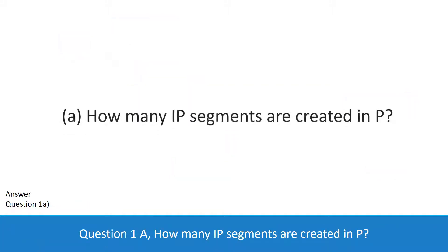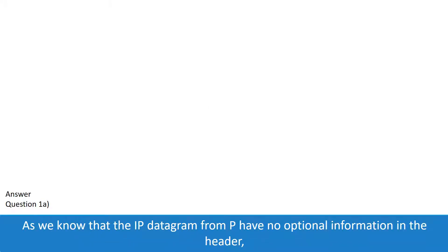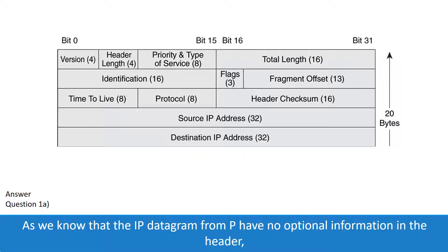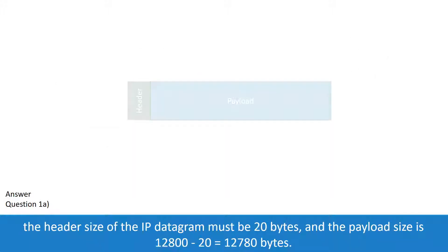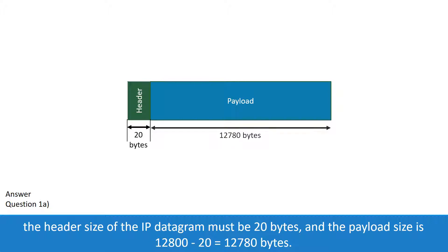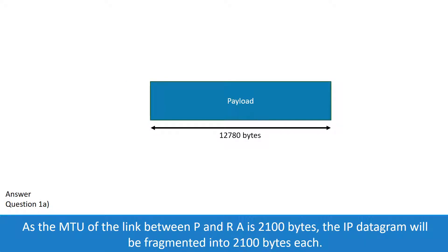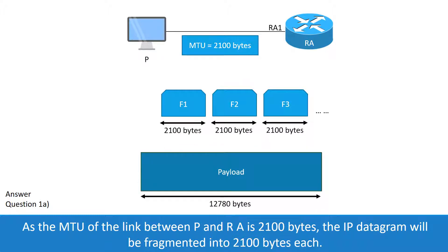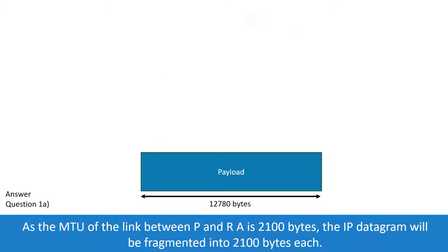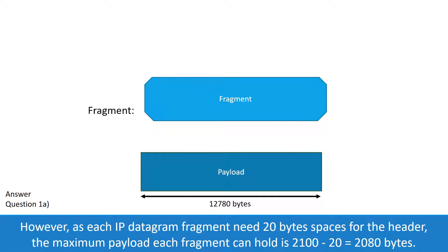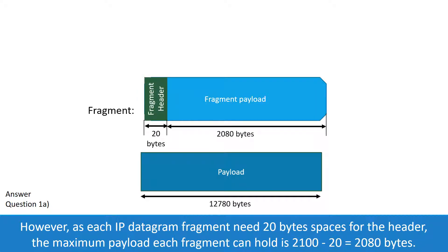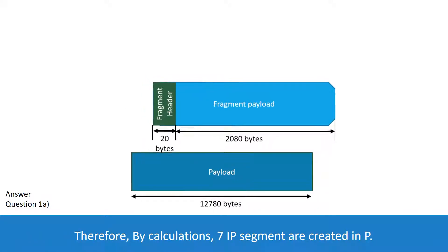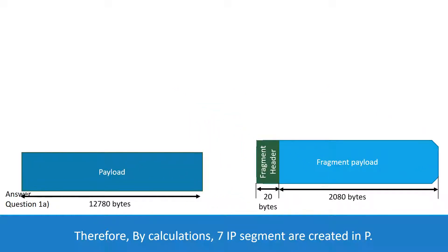Question 1a: How many IP segments are created in P? Since the IP datagram from P has no optional information in the header, the header size is 20 bytes and the payload size is 12,780 bytes. As the MTU of the link between P and RA is 2100 bytes, the datagram will be fragmented into 2100-byte segments. Each fragment needs 20 bytes for the header, so the maximum payload each segment can hold is 2080 bytes. Therefore, seven IP segments are created in P.